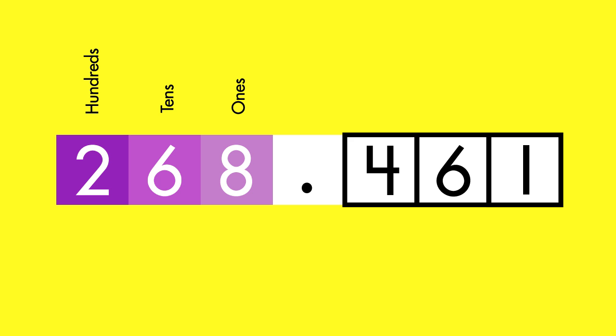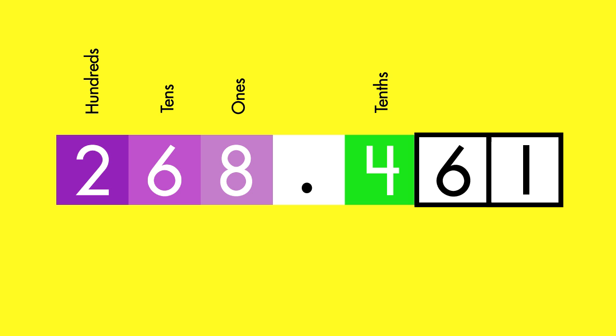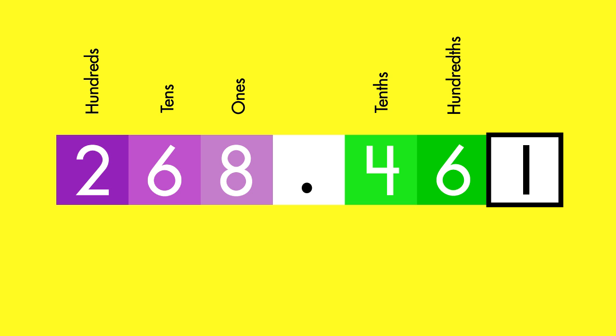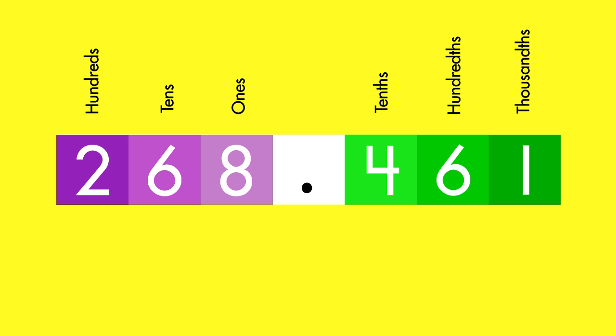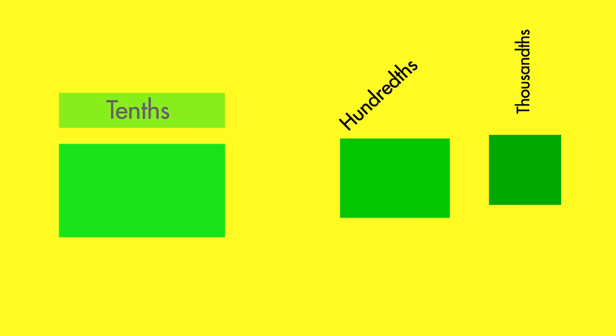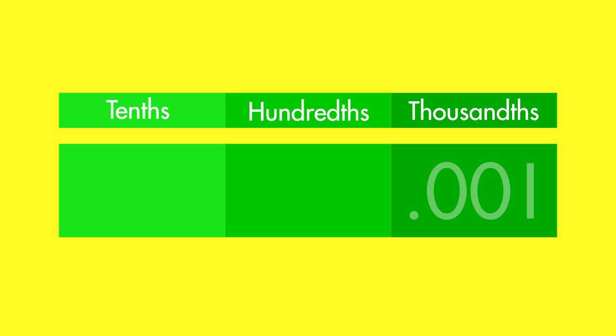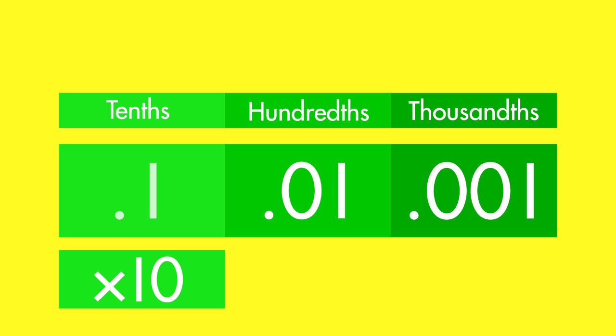The first three place values after the decimal point are tenths, hundredths, and thousandths. The value of each place is ten times the value of the place before. Do you see the pattern? As decimal numbers get bigger, going from right to left, each place contains one less zero than the value of the place to the right.